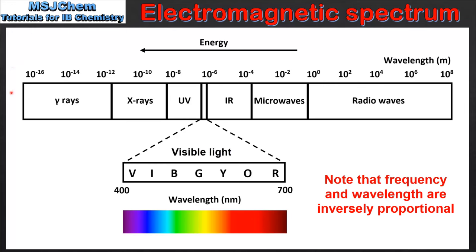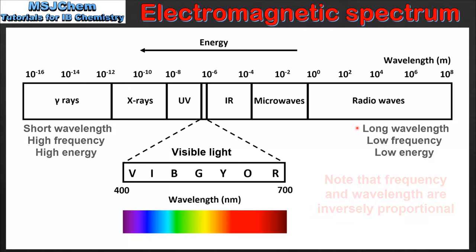As we can see, the electromagnetic spectrum is divided into regions. From right to left we have radio waves, microwaves, infrared radiation, visible light, ultraviolet radiation, X-rays and gamma rays.